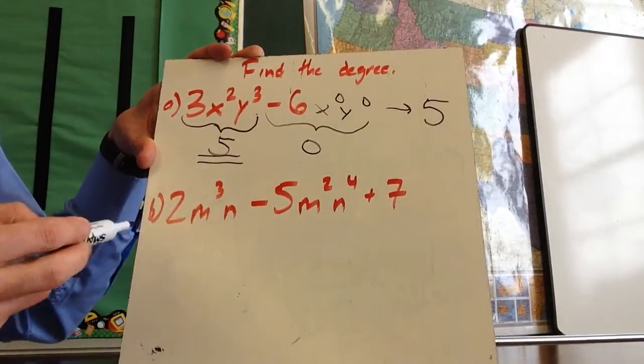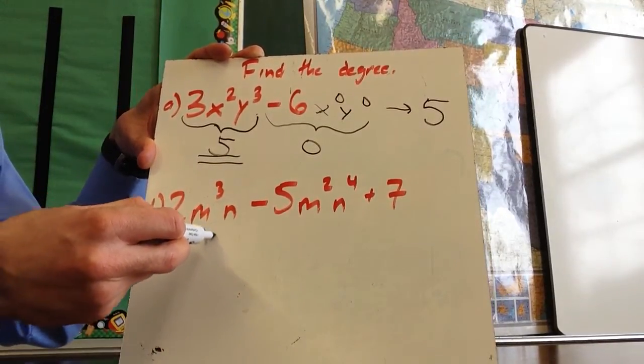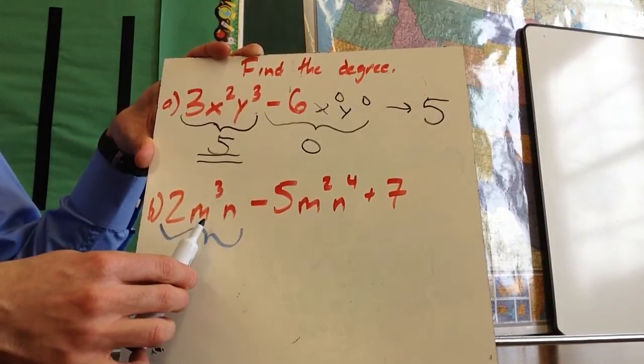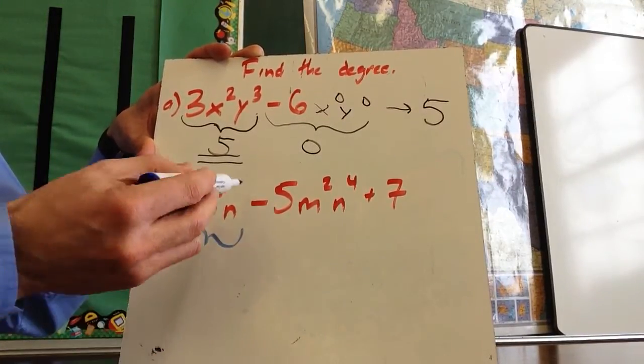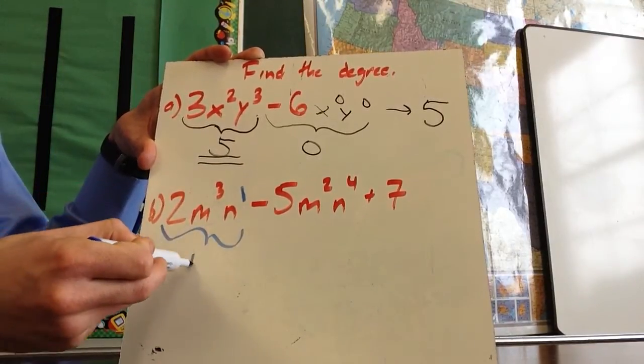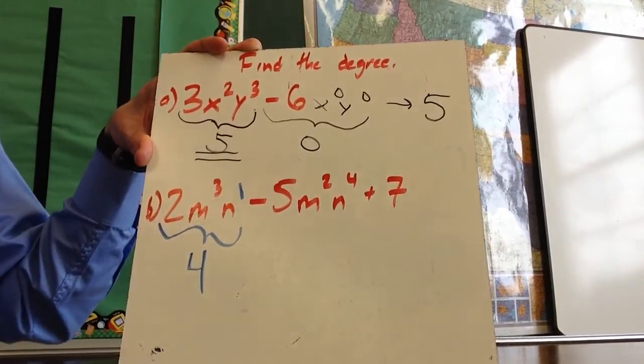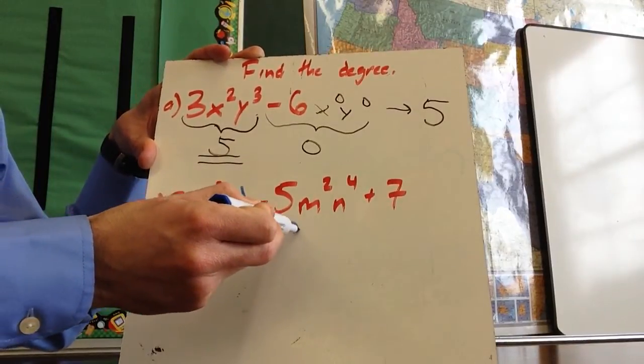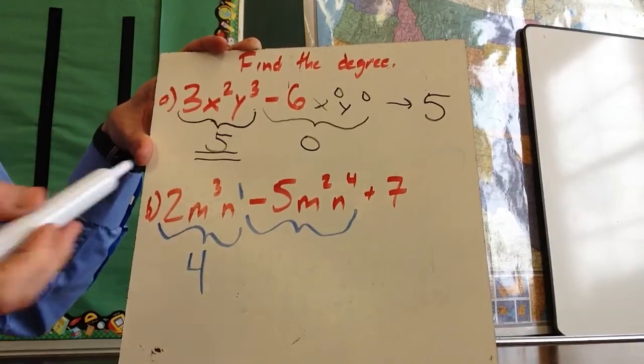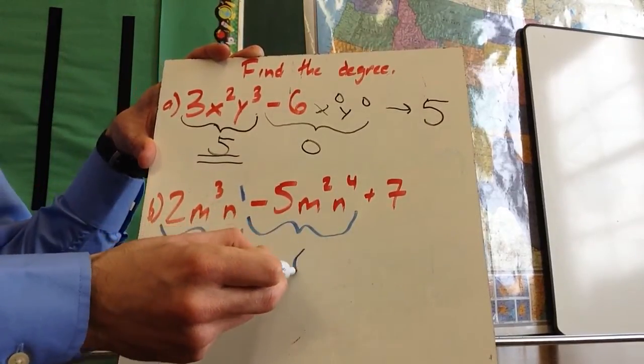So I now have three terms. Talking about just this first one, the two I'm not necessarily concerned about, the m to the third. Remember, this is the same as n to the first. So when I add those together, that is a total of four. Now I'm looking at the negative five, m to the second, n to the fourth. This has a total power of six.